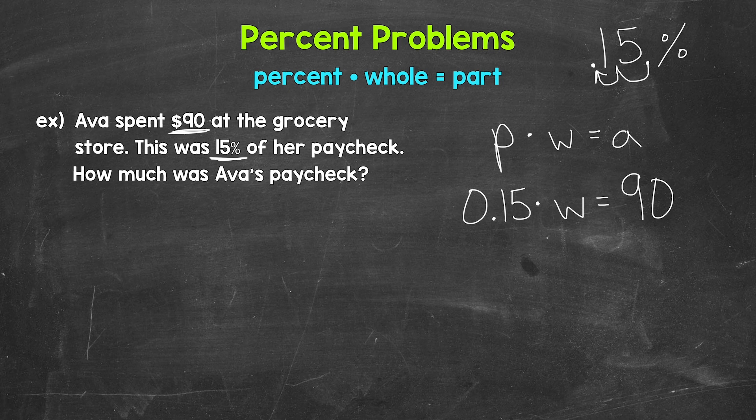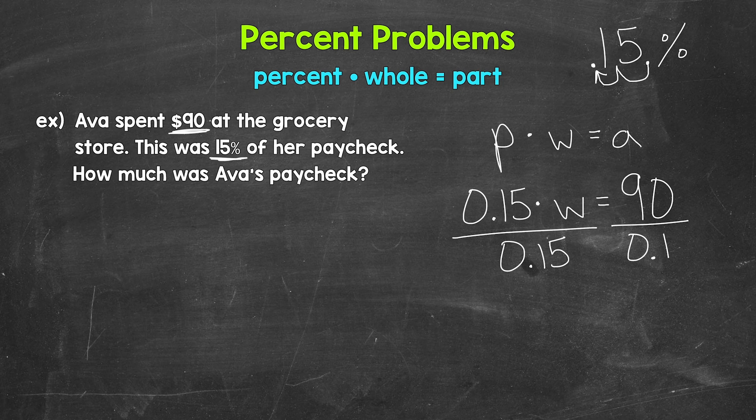W is being multiplied by 15 hundredths. So we need the inverse operation, the opposite operation, division in order to isolate W. So let's divide the left side of the equation by 15 hundredths. Whatever we do to one side of an equation, we must do to the other. So divide the right side by 15 hundredths as well.